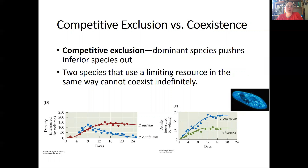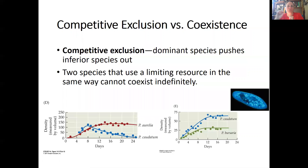Competitive exclusion means that two species start competing, a dominant species pushes the inferior species out. This happens when two species are using a limiting resource in a very similar way so they cannot coexist. This is shown in figure D where two species of Paramecium come together — both grow at first, then P. aurelia continues growing logistically while P. caudatum goes to extinction, illustrating competitive exclusion.